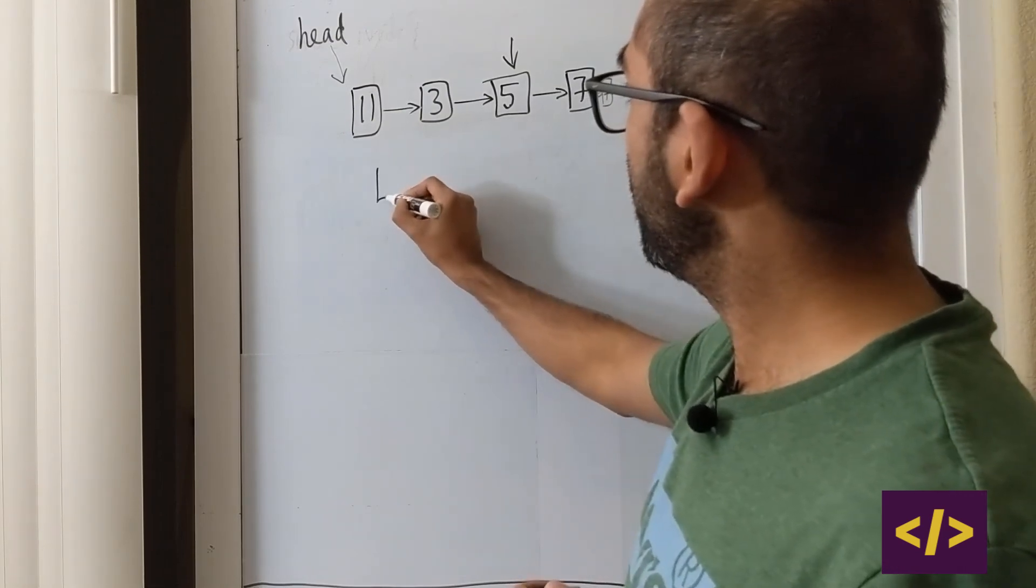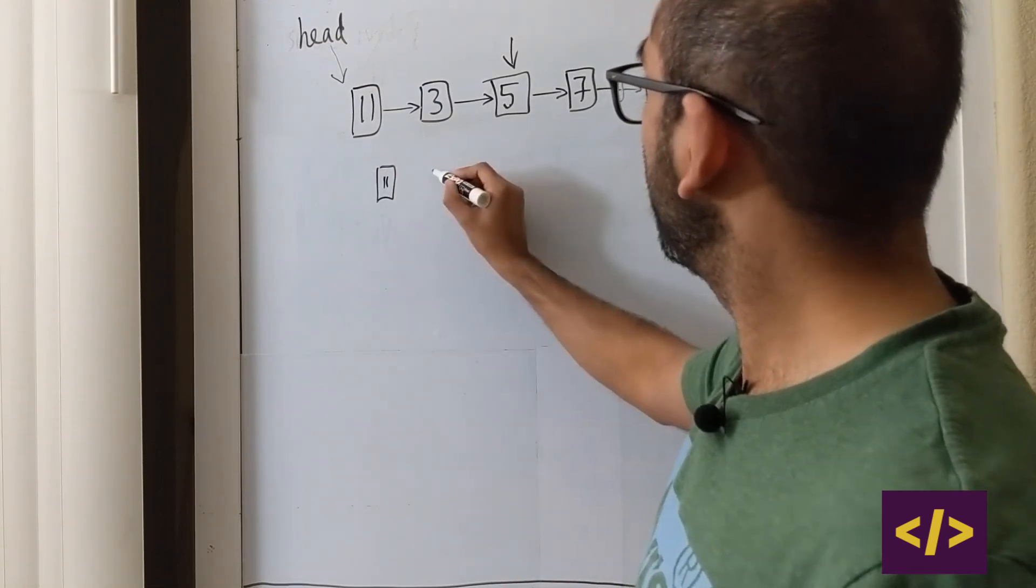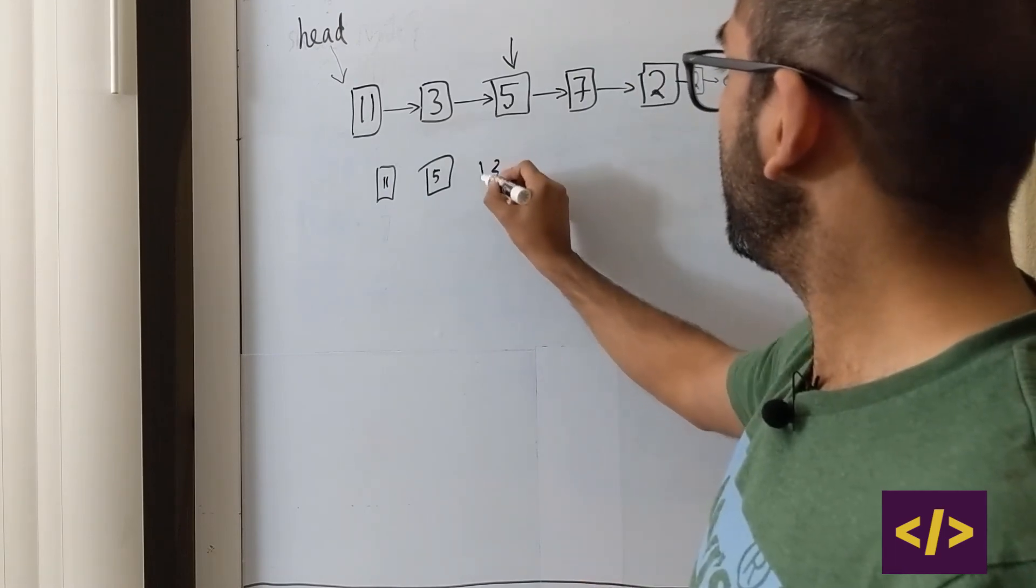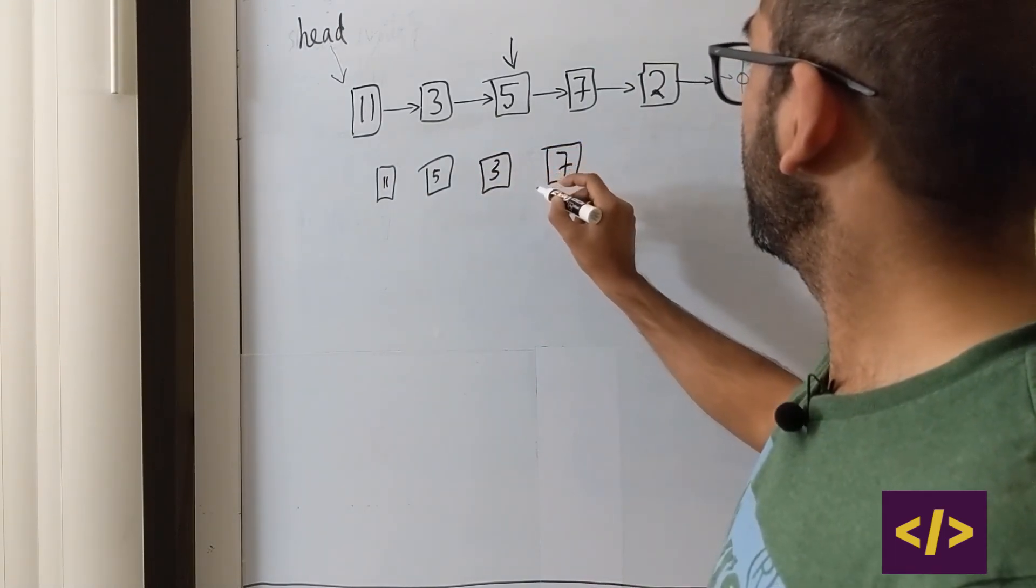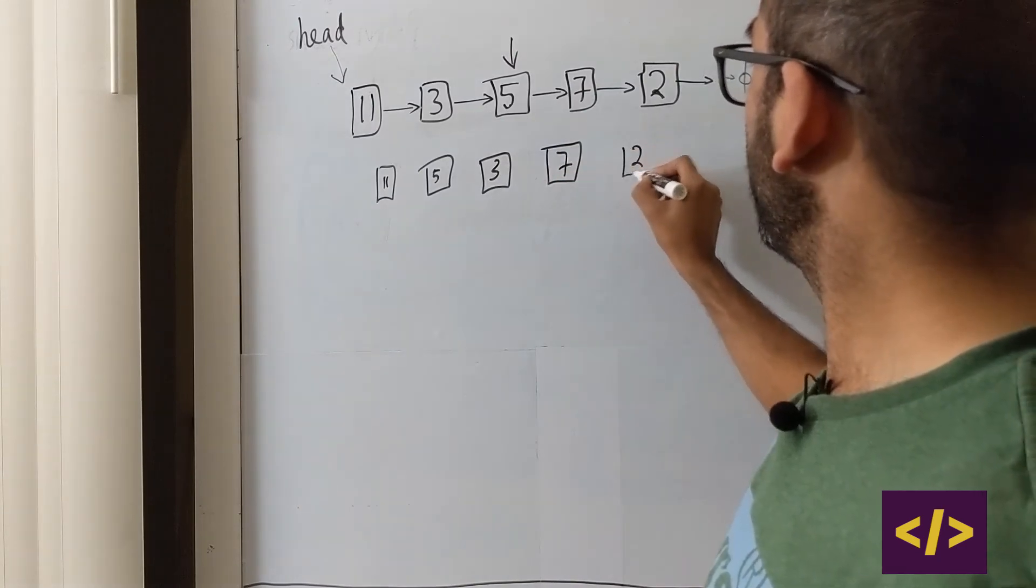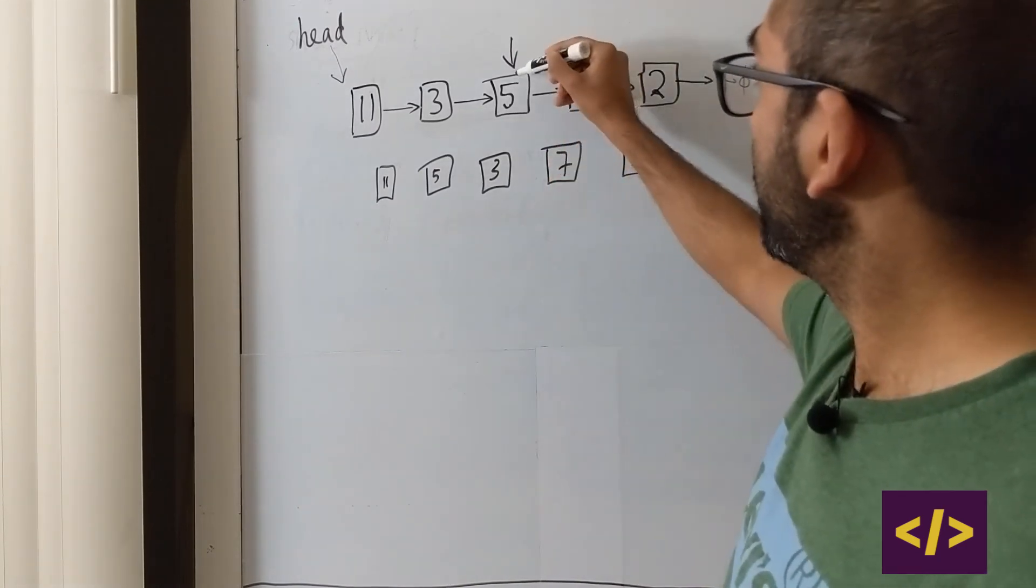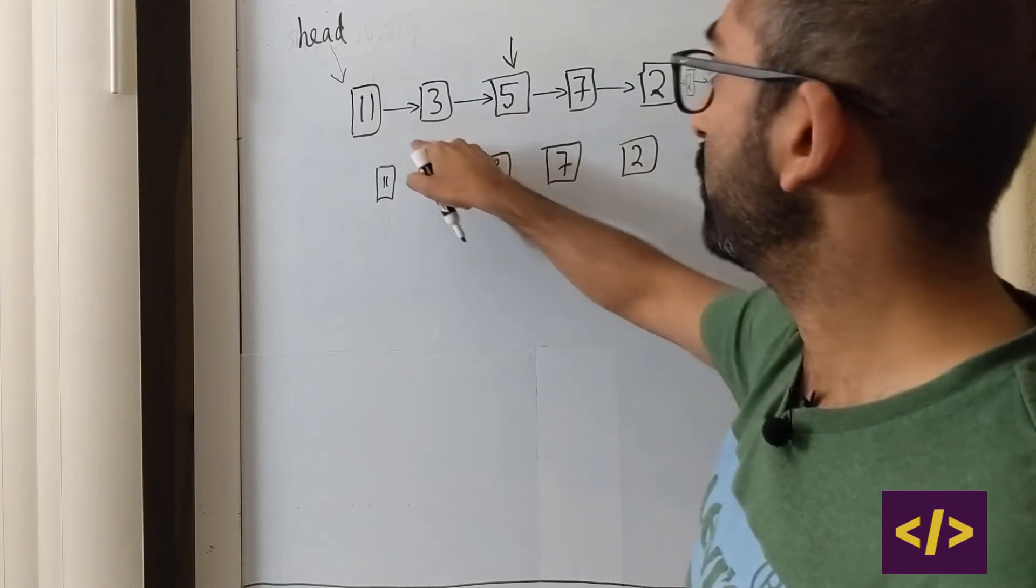Now, assume that we are going to take this 5 here, and put it in between 1 and 3. Let's just do that and see what happens. What are we going to do? We are going to do 1, 5, 3, 7, and 2. So what happened here? We took this guy and put it in between here.